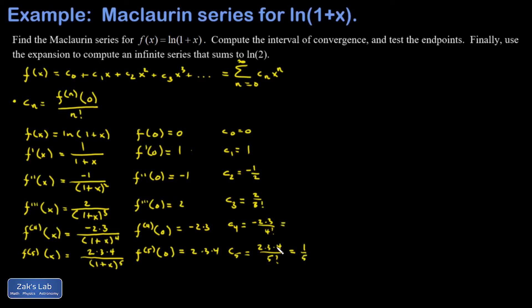4 factorial is 4 times 3 times 2, and the 3 and 2 cancel out, leaving me with negative 1 fourth. 3 factorial is 3 times 2, and the 2's cancel, leaving me with 1 third. The term prior to that is negative 1 half. I'll just rewrite c1 to follow the pattern. And then c0, of course, vanished. So now I can see the pattern: 1, negative 1 half, positive 1 third, negative 1 fourth, positive 1 fifth, negative 1 sixth, and so on.